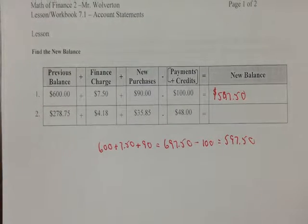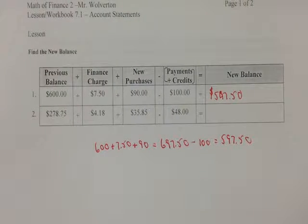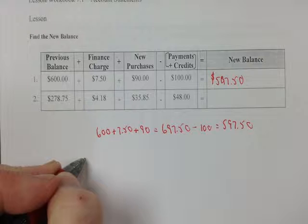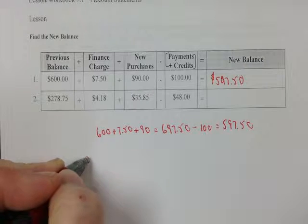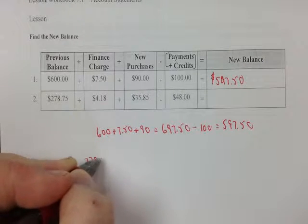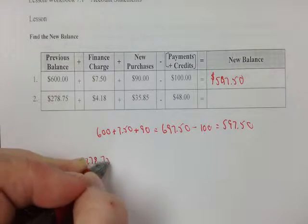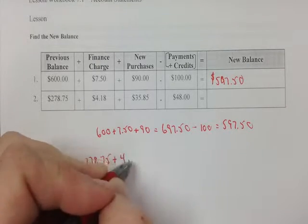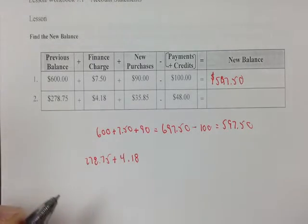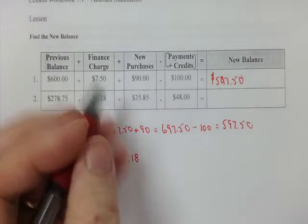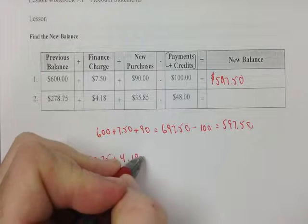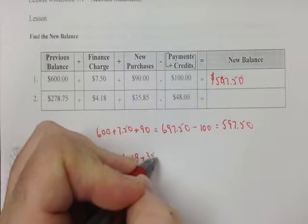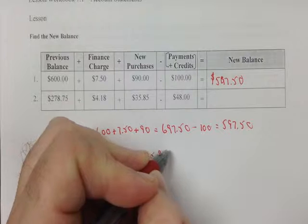Continuing on with the same problem since it's no different. The previous balance is $278.75. You're going to add a service charge or finance charge to the account because you used it and they allowed you to use it. And then you also bought $35.85 worth more stuff.